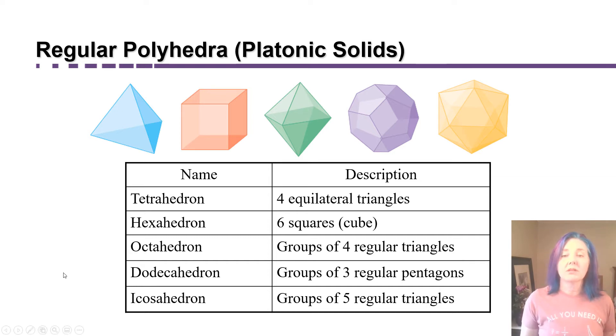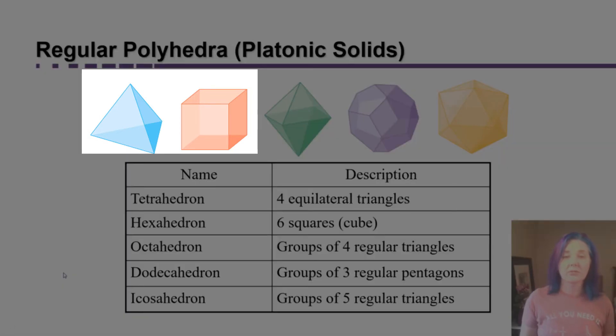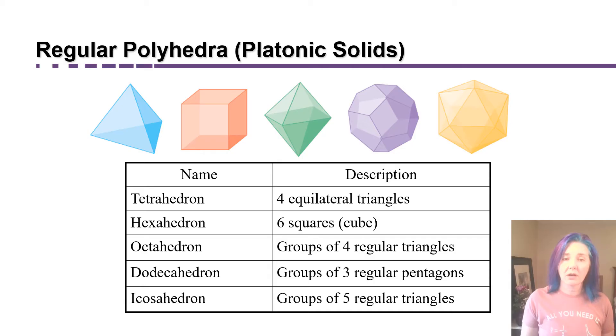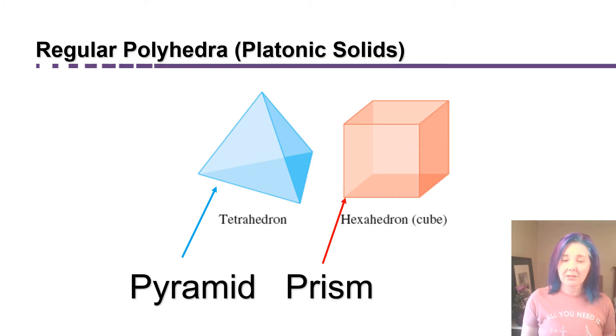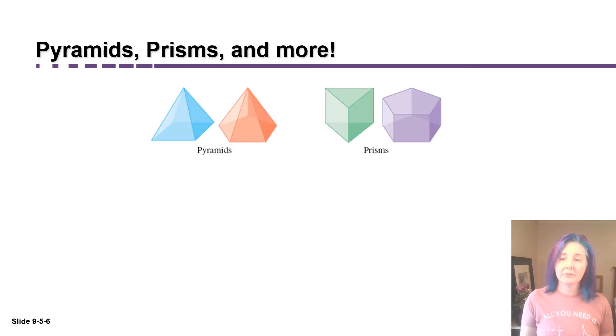We're not going to do much with these objects except for the first two because they fall into two categories that are going to be important to us. In particular, the tetrahedron is a type of pyramid, and the cube is what's called a prism. So let's talk about pyramids and prisms.